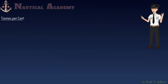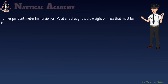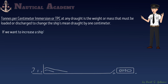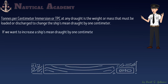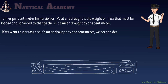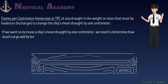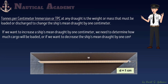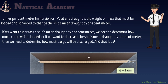Tons per centimeter immersion, or TPC, at any draft is the water mass that must be loaded or discharged to change the ship's mean draft by one centimeter. If we want to increase the ship's mean draft by one centimeter, we need to determine how much cargo will be loaded. Or if we want to decrease it by one centimeter, we need to determine how much cargo will be discharged. And that is called TPC.